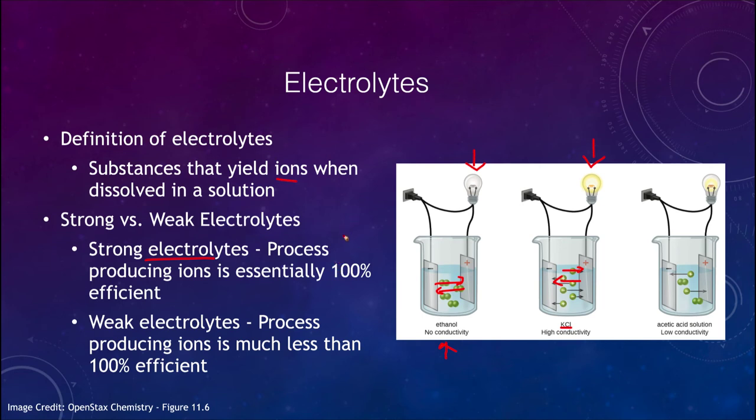A weak electrolyte would be less than a hundred percent efficient, in fact could be much less, could only be a few percent. Acetic acid or vinegar is one example of this. Many of the molecules remain intact but there are some ions so you can get some electrical flow between them and the light will illuminate, just not as strong as it did with the strong electrolyte.